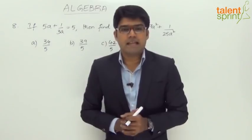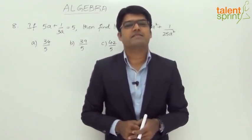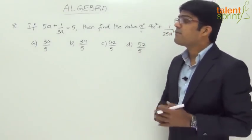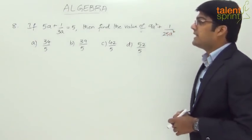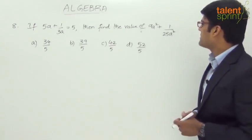Moving on to question number 8, and let me mention that this is one of the earlier SSC CGL exam questions. It says if 5a plus 1 by 3a equals to 5, then find the value of 9a square plus 1 by 25a square.